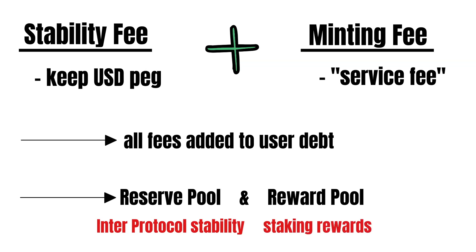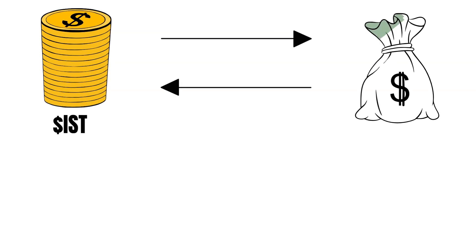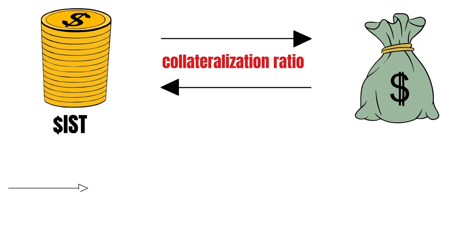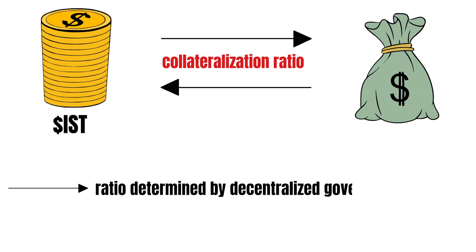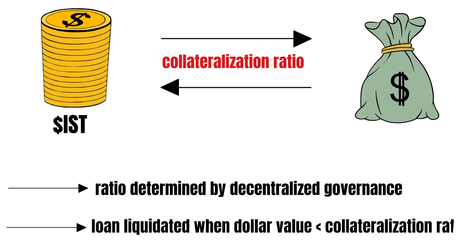The reserve pool supports the stability of the Inter Protocol, and the reward pool rewards BLD stakers for securing the chain. The amount of IST a user can mint is determined by the value of the deposited collateral — this concept is called the collateralization ratio. The collateralization ratio is determined on a per-collateral basis by decentralized governance. If the dollar value of the collateral falls below the collateralization ratio, the protocol liquidates your loan, selling your collateral to pay off the remaining debt and a penalty fee.